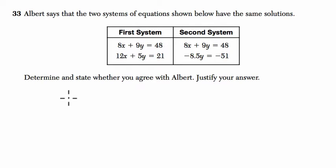That will get me 1.5 times 8x, that's 12x. 1.5 times 9 is 9 plus 4.5, which is 13.5y. And 1.5 times 48 is 48 plus 24, which is 72.